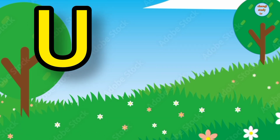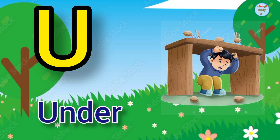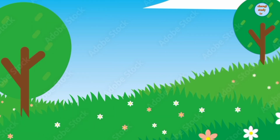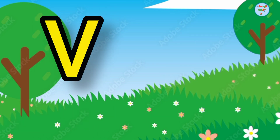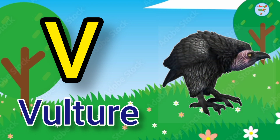U. U for under, under means neache. V. V for vulture, vulture means gullab.